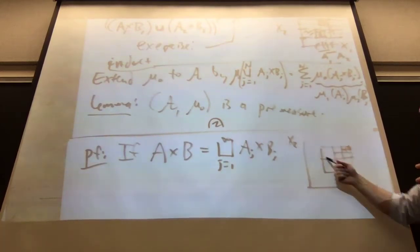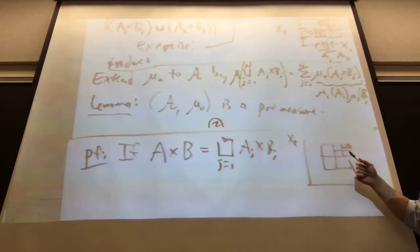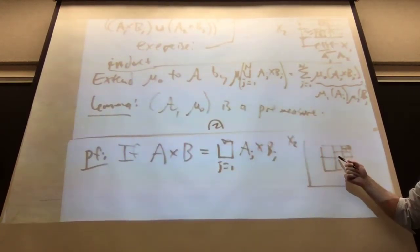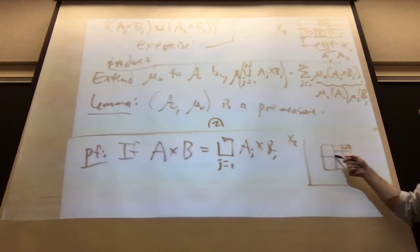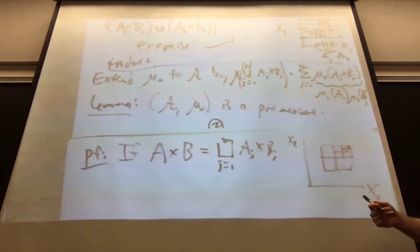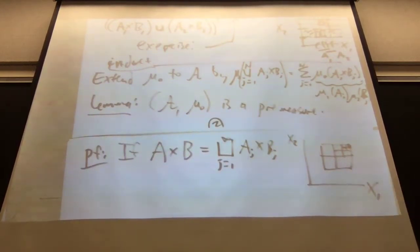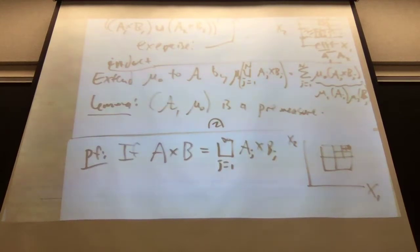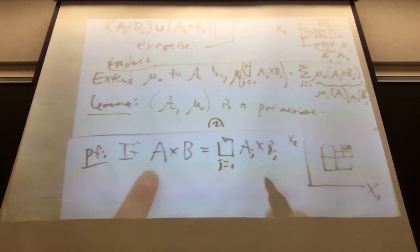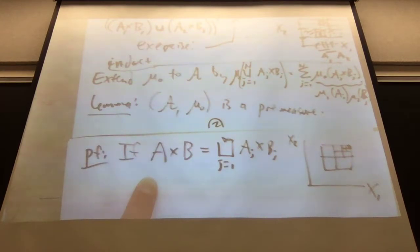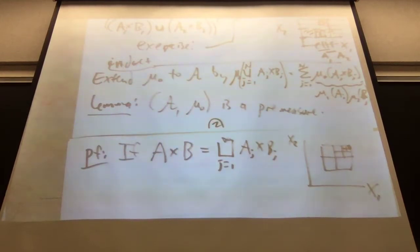Each of the B_j's are measurable and B is measurable; these are all elements of M_2. And mu_2 is a measure. Since mu_2 is a measure, the measure of B equals the sum over all j of mu_2(B_j), with the condition that we only use those B_j for which x_1 is in the appropriate A_j.